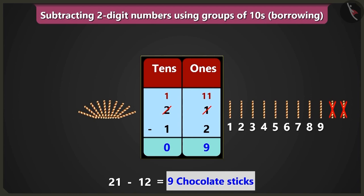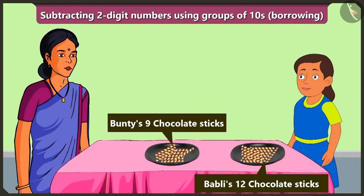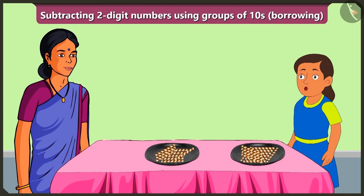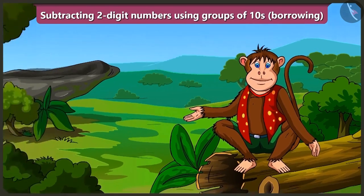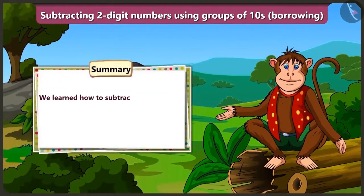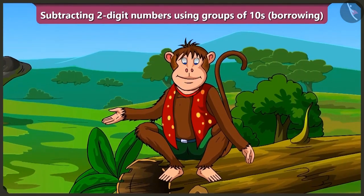Well done, Bubbly! You gave the right answer. Take your chocolate sticks and study. Friends, today we learned how to subtract two-digit numbers using groups of tens borrowing with the help of an example. In the next video, we will learn how to subtract with the help of Bubbly's abacus without even writing.